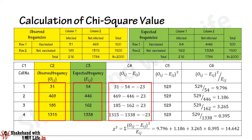In column 4, find the differences between observed and expected frequencies. For cell 1: 31 minus 54 equals minus 23. For cell 2: 469 minus 446 equals 23. For cell 3: 185 minus 162 equals 23. For cell 4: 1315 minus 1338 equals minus 23.